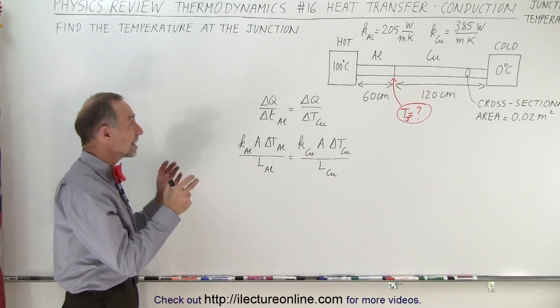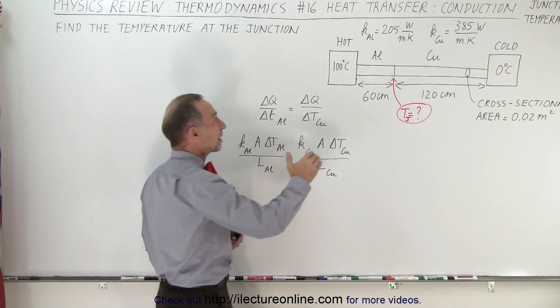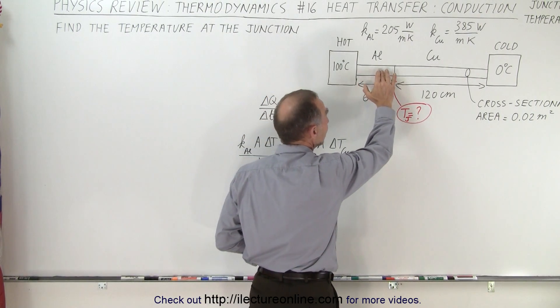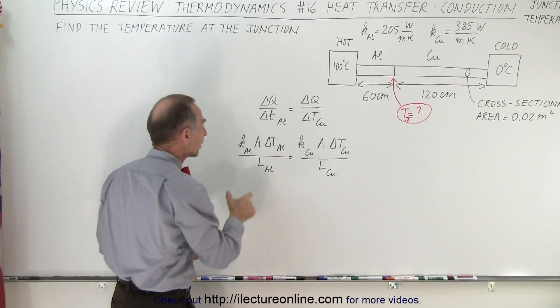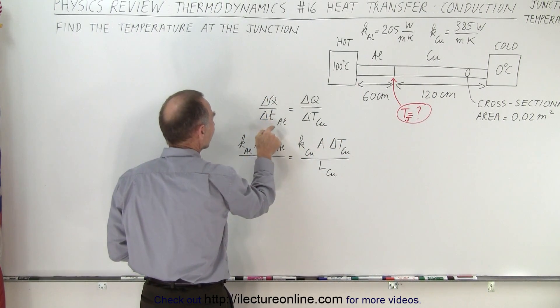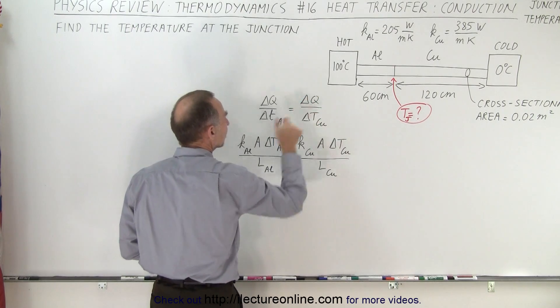Well, we use a technique where we realize that the amount of heat traveling through the left side must equal the amount of heat traveling through the right side. Kind of like water through a hose. And so we can say that the delta Q delta T for aluminum must equal the delta Q delta T for the copper.